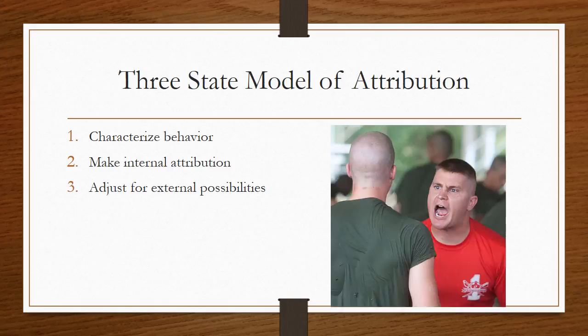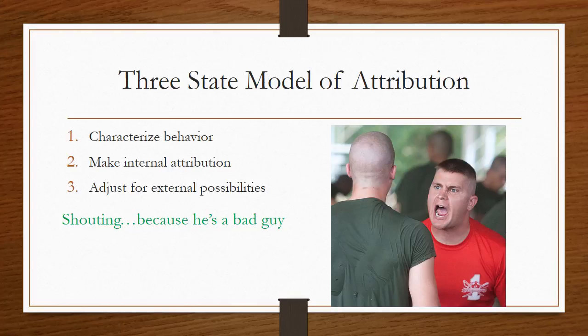Here's how this works. You see this guy. You characterize the behavior — he's shouting. Then you make an internal attribution — he's shouting because he's a bad guy. Then you adjust for external possibilities — but maybe it's just his job. So the three-stage model says: first, label the behavior; then make an internal attribution; then adjust, knowing that not everyone is purely internally motivated all the time.